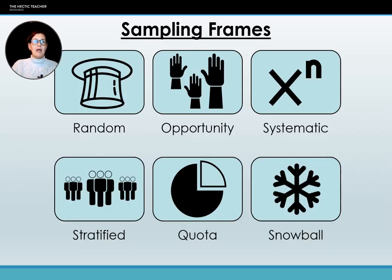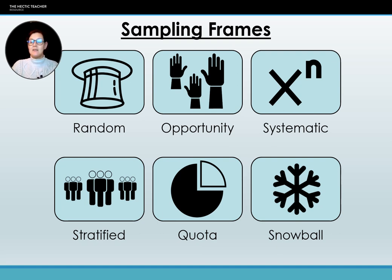The six sampling frames we'll look at are: random sampling, opportunity sampling, systematic, stratified, quota, and snowball. There are more sampling frames than these and some may have slightly different names, but these are the six we're covering today. Some do require some mathematics but it's simple percentages — nothing overly complicated. So let's look at our first sampling frame.